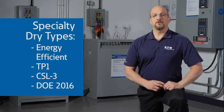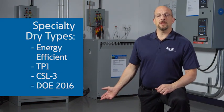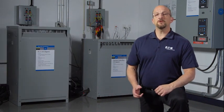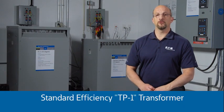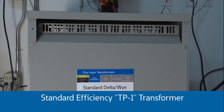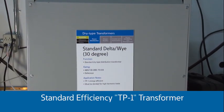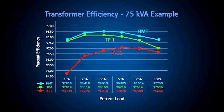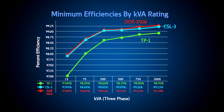There are many types of specialty dry type transformers. This standard efficiency TP1 transformer directly behind me has efficiency ratings based on the NEMA TP1 standard. At the PSEC, we've tested and can discuss the entire array of high efficiency transformers, like CSL3 and the DOE 2016 transformers. These specially designed transformers reduce core and winding losses, optimizing them for special applications.